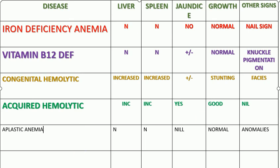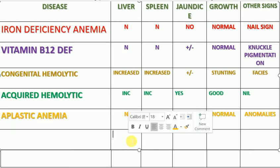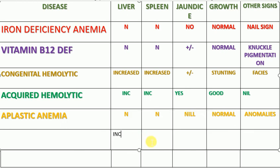In aplastic anemia the liver and spleen are normal, there is no jaundice, the child's growth is normal, but there are some anomalies associated with it. Now the next clinical scenario: the liver is just palpable — slightly increased. The spleen is also a little bit palpable, slightly increased. Jaundice is absent — nil. The growth of the child is normal. And there is bony tenderness and enlargement of lymph nodes.